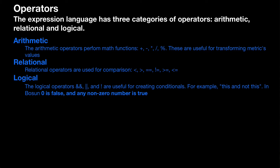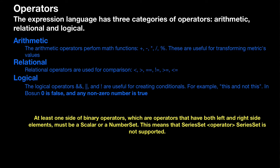In Bosun, zero is false and any non-zero number is true. This is true of both the logical operators and whether or not an alert triggers, which is something we'll get into later. At least one side of binary operators — operators that have both left and right side elements — must be a scalar or a number set. This means that series set operator series set is not supported and will raise an error in Bosun. You can only have something like series set operator scalar, or number set operator scalar, and the left and right side of the operator can switch order — it doesn't matter.